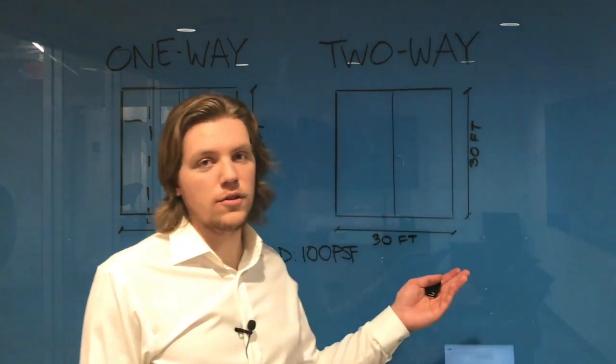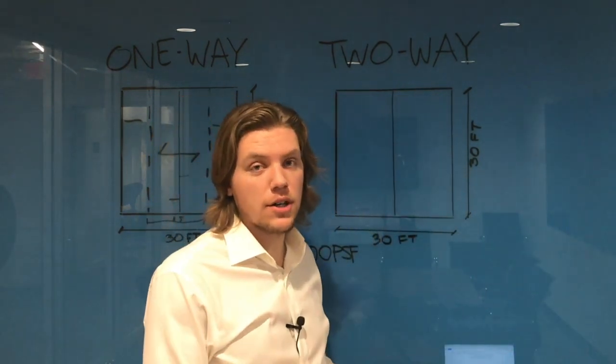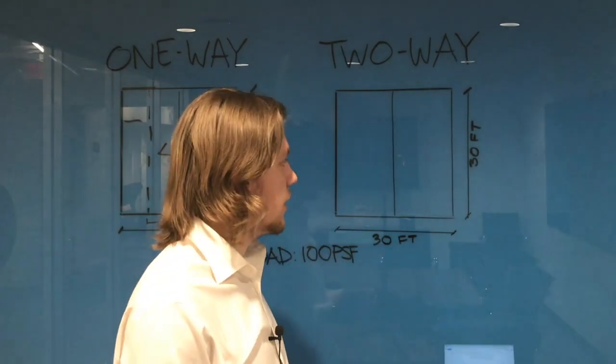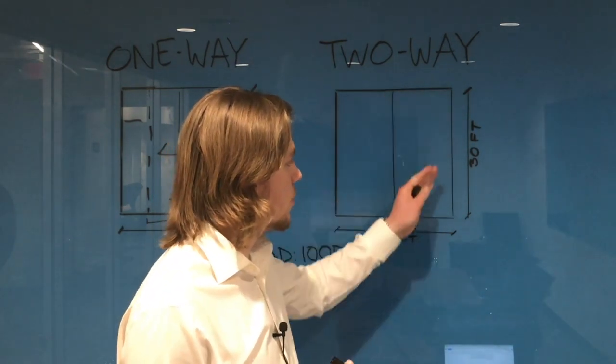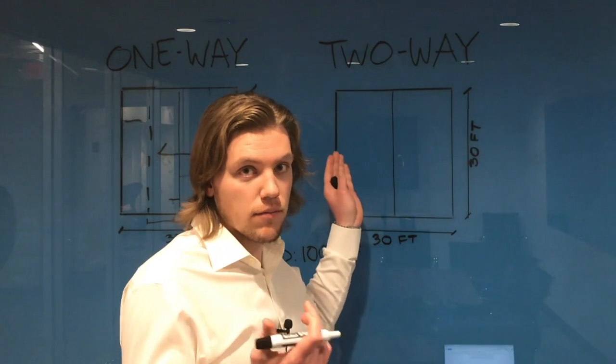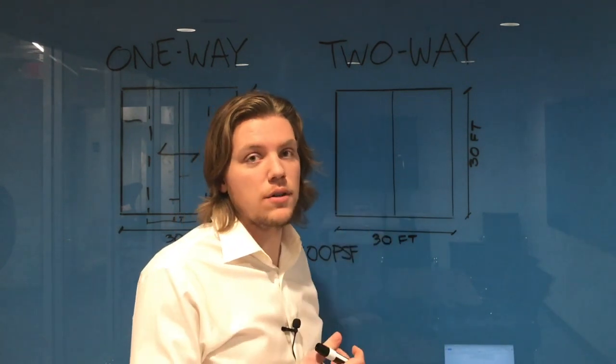So the first thing I want to do for the two-way slab is identify the slab direction or the span direction. It's really easy for us because since it's supported on all four sides here, we're saying that there is no need to figure out what the slab direction is.